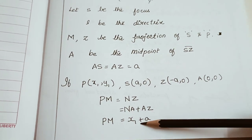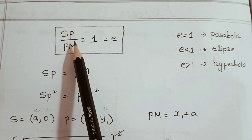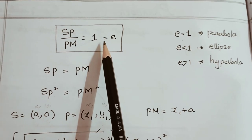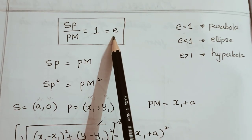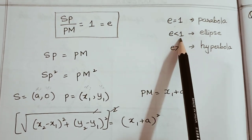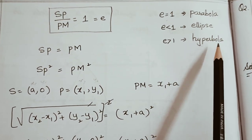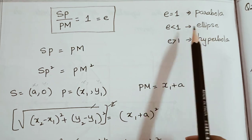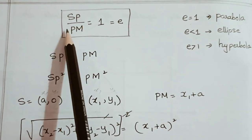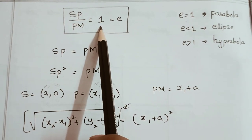Now we use the formula SP/PM = e, where e = 1 for a parabola. When e < 1 it is an ellipse, and when e > 1 it is a hyperbola. Since we are dealing with a parabola, e = 1. So SP/PM = 1, which means SP = PM.